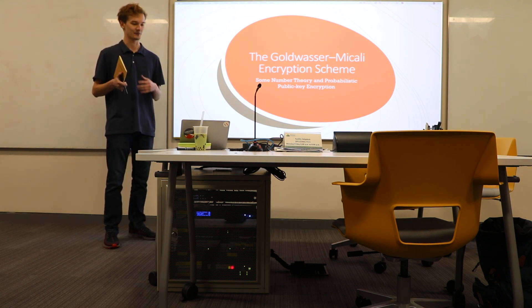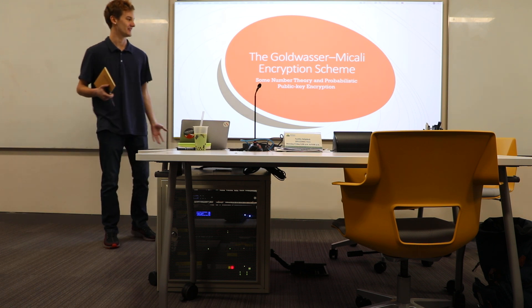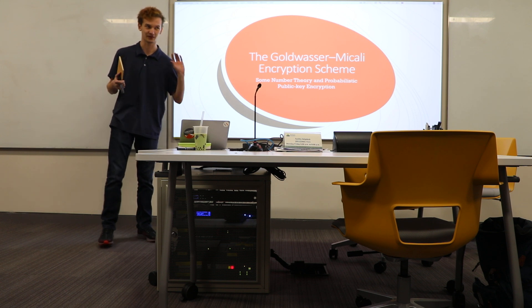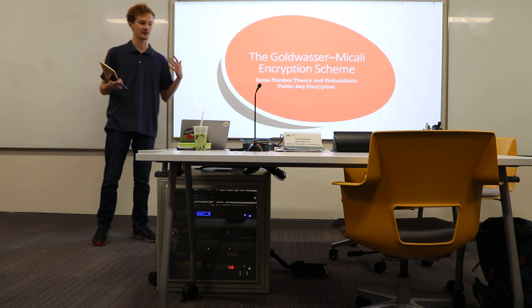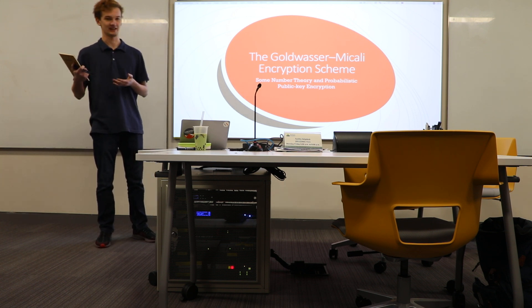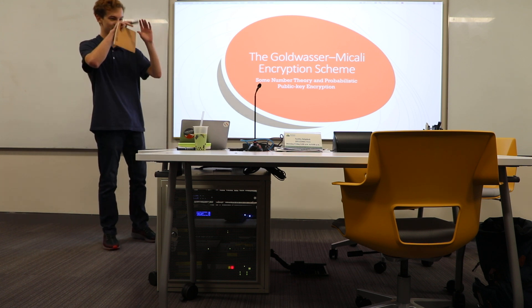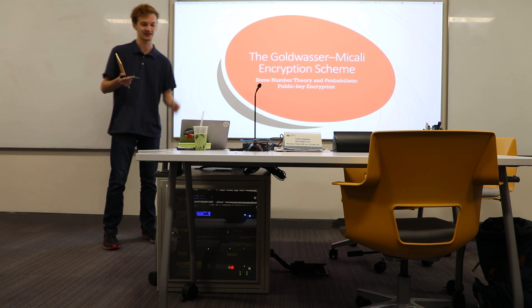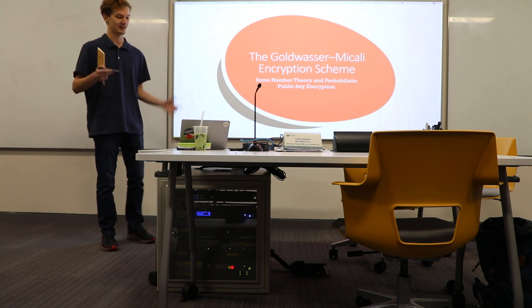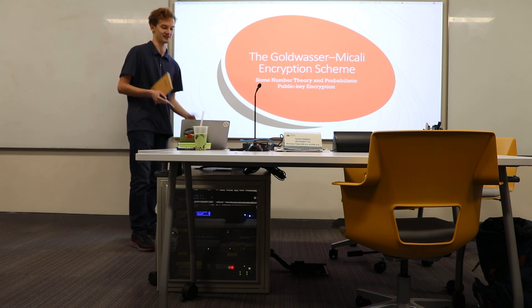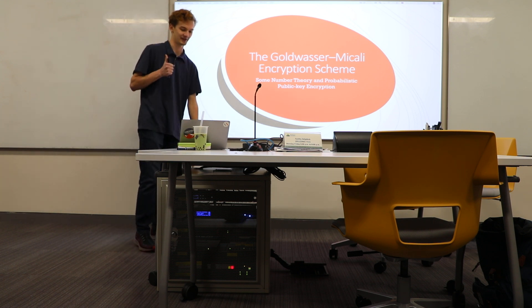So one time you encrypt it, it might be the number 63, and then the next time you encrypt the same exact message - you're encrypting a one both times - it will give you the number 54. And so that basically prevents people from just taking note of everything you send if they're able to see it, and then going back and looking at that later to try to understand what the new message you're sending. So it's very useful for encryption.